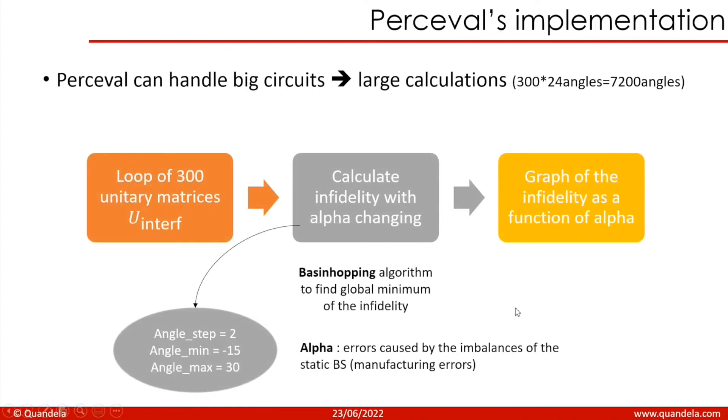I will try to explain to you the main parts of the code. Initially we start with a certain matrix size N. We will then generate U-target of size N. After we loop over the alpha between minus 15 and 30 with a step of 2 degrees. Then we loop over the U-target again so that we can proceed with the minimization algorithm. We vary the phases of the phase shifters with alpha fixed to find the optimal infidelity between U-target and U-interferometer. We then loop over several tries using the basinhopping algorithm. This basinhopping algorithm allows us to find a global minimum of the infidelity. At the end, we want to plot the infidelity as a function of alpha.